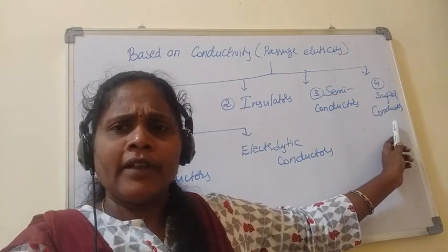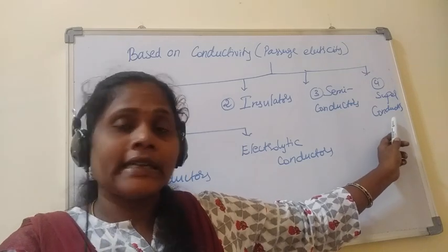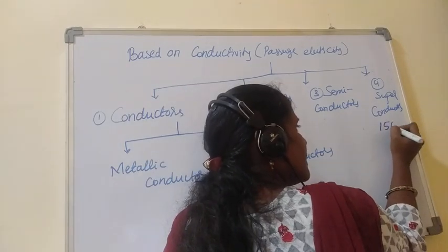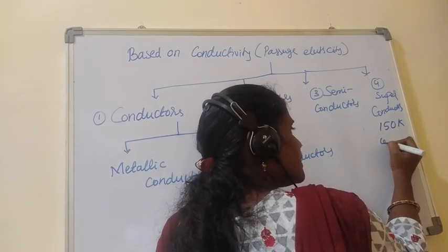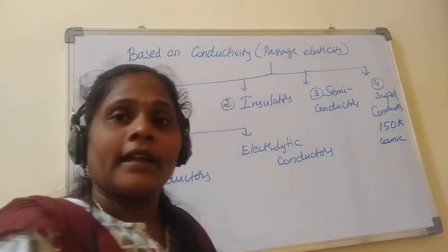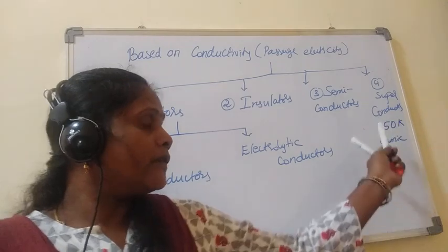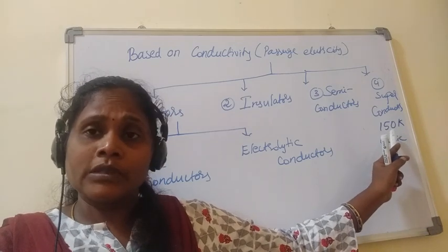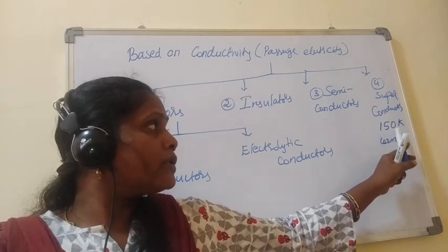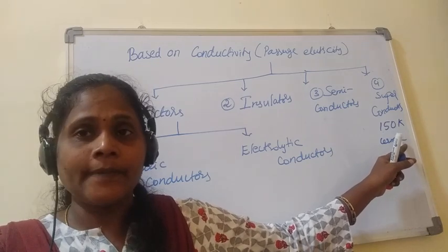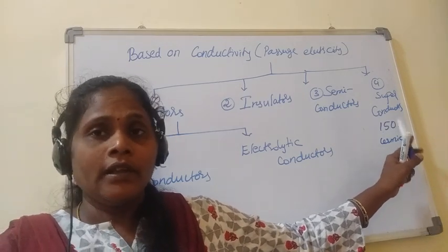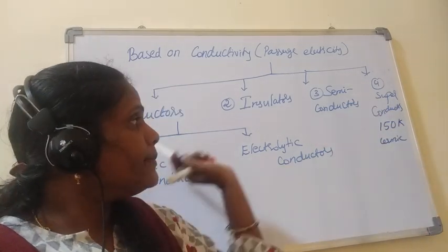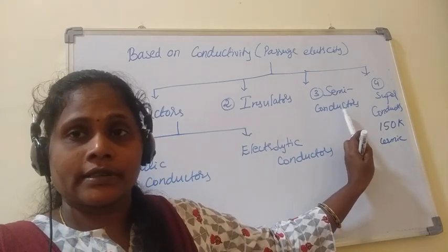Earlier, metals at very low temperatures were expected to have superconductivity. But nowadays, even at 150 Kelvin, some ceramic materials and metals are expected to show superconductivity. Even 150 Kelvin is still a negative degrees Celsius temperature, but before, it required even much lower temperatures to show superconductivity. People are now identifying substances which show superconductivity at 150 Kelvin. Substances with conductivity between conductors and superconductors are called semiconductors.